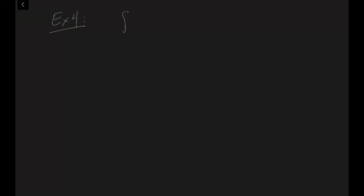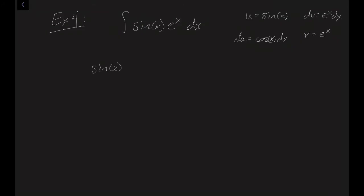The last example is quite tricky. We're going to take the integral of sin(x) eˣ dx. We let U equal sin(x) and dV equal eˣ dx. When you have a trigonometric function times an exponential, it doesn't really matter which order you start with. So we get dU equals cos(x) dx and V equals eˣ. Plugging into the formula we get sin(x) eˣ minus the integral of cos(x) eˣ dx.